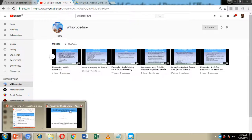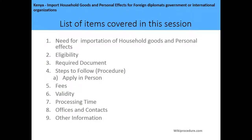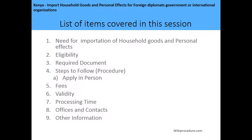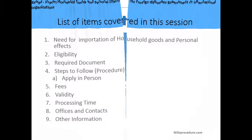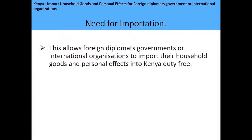The list of items we are going to cover in this session includes: the need for importation of household goods and personal effects, the eligibility criteria, required documents, steps to follow in making the application, the fees, the validity period, the processing time, offices and contact information, and any other relevant information on importing household goods and personal effects of foreign diplomats, governments, or international organizations.